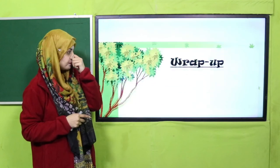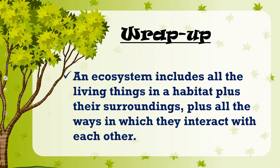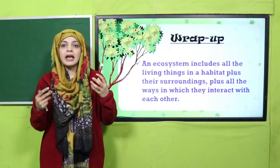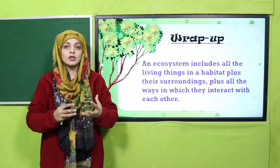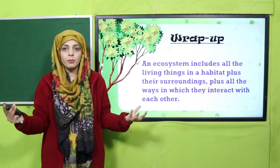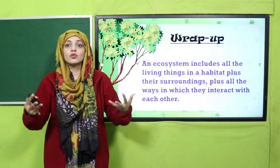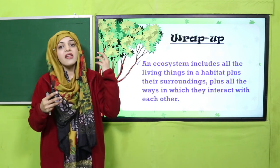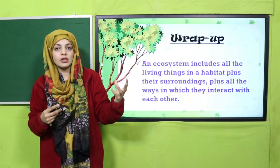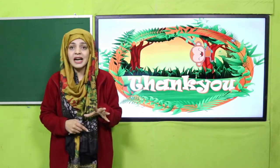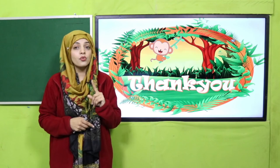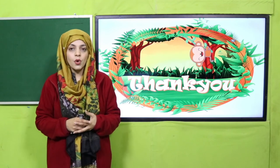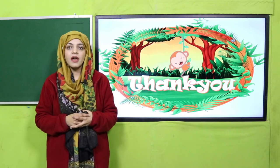Now for the wrap-up: an ecosystem includes all the living things in a habitat, plus their surroundings, plus all the ways in which they interact with each other. All animals, plants, and non-living components in a habitat interact with each other, benefit each other, and depend on each other — that is called an ecosystem. I hope you clearly understand the ecosystem. If you find any problem, re-watch the video, complete your homework and worksheet. Keep everyone around you safe. Have a good day, and Allah Hafiz.